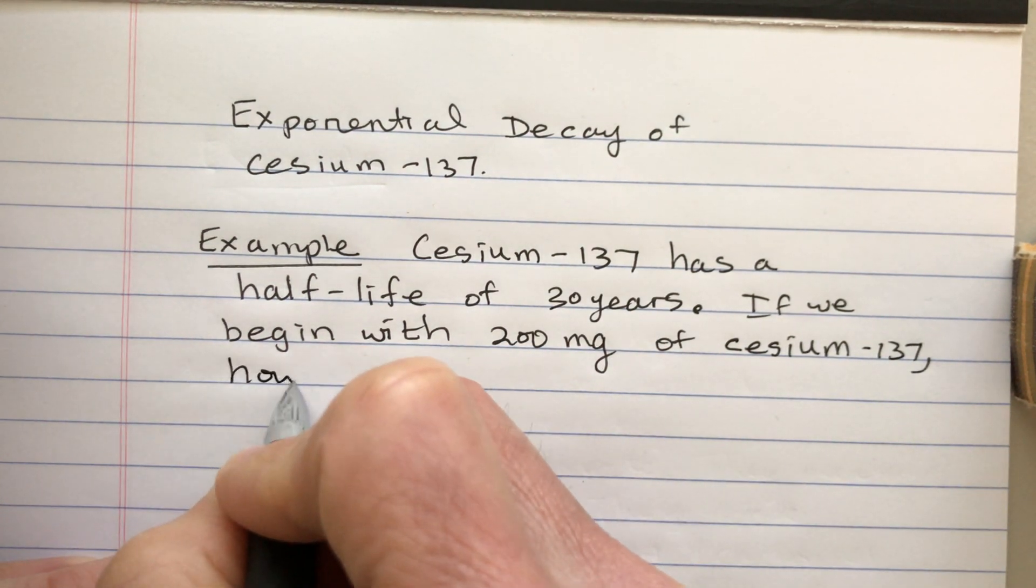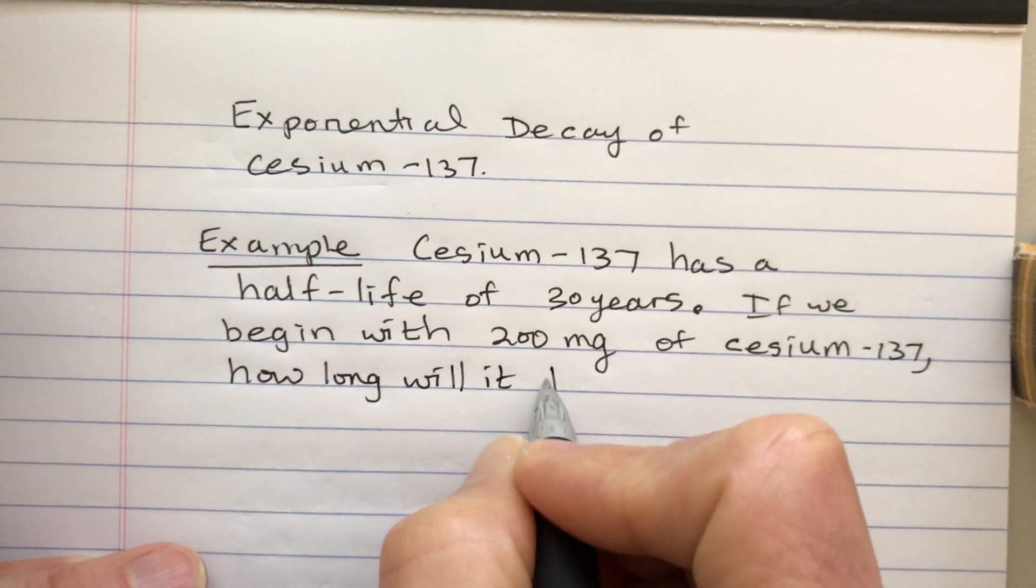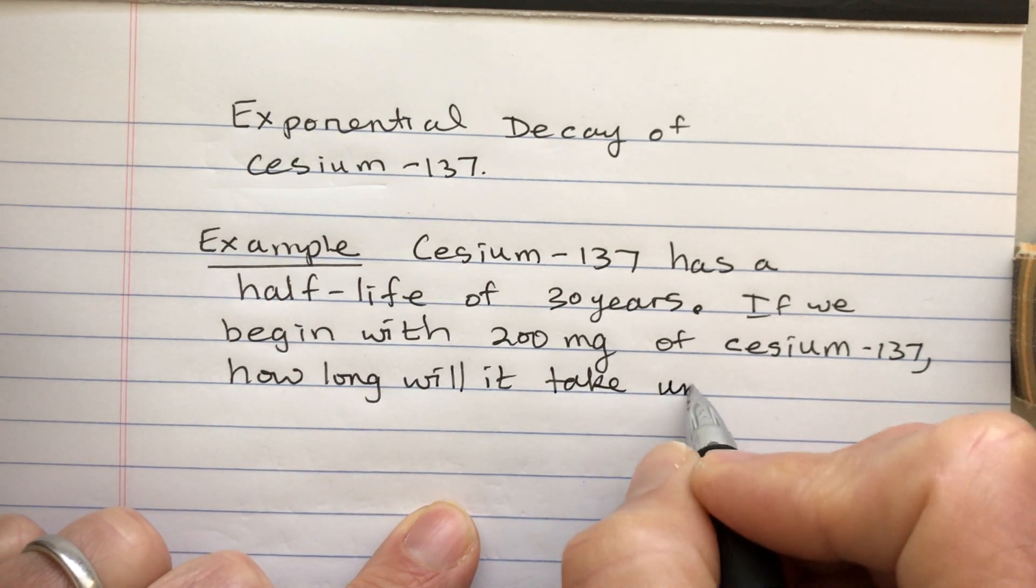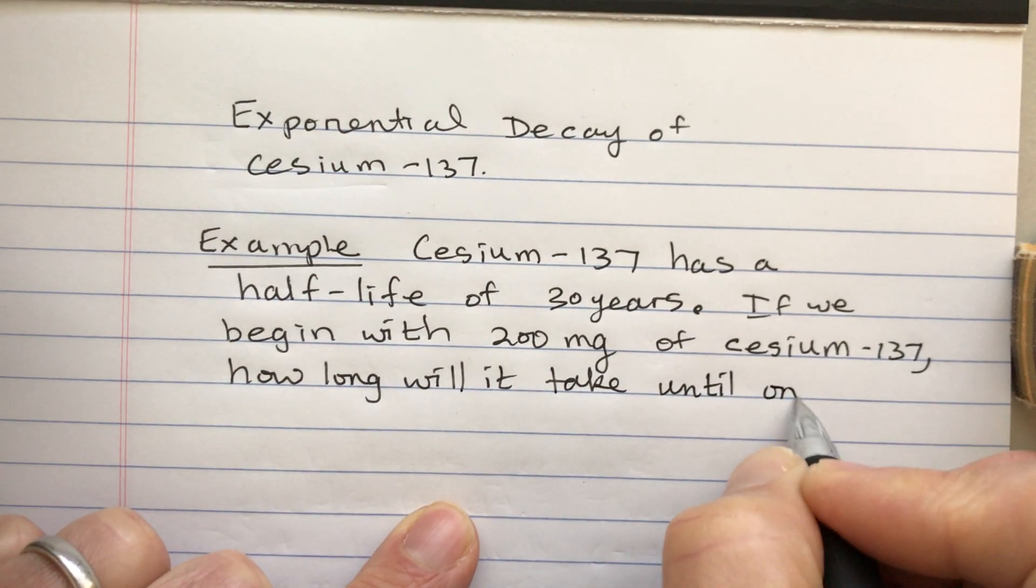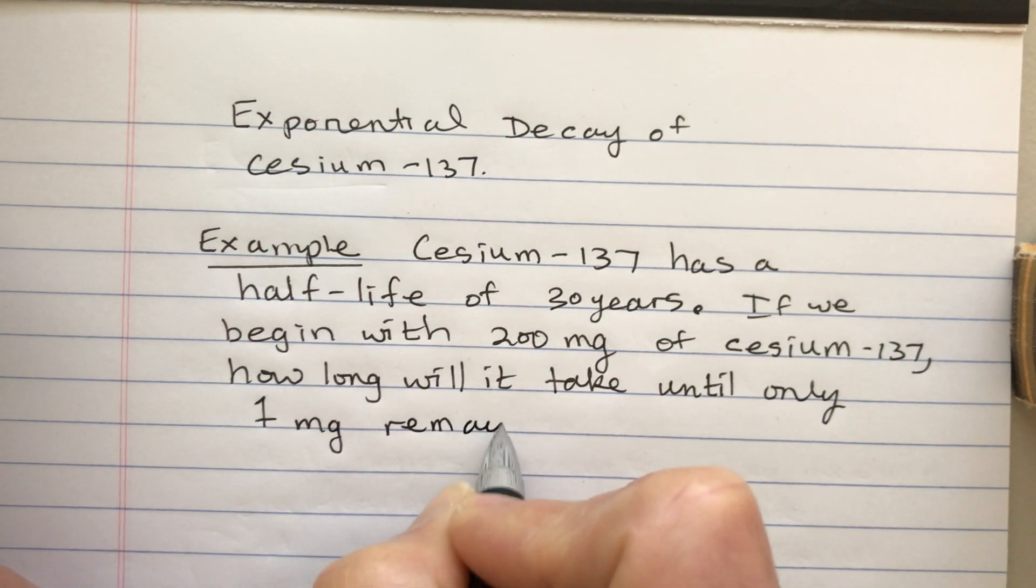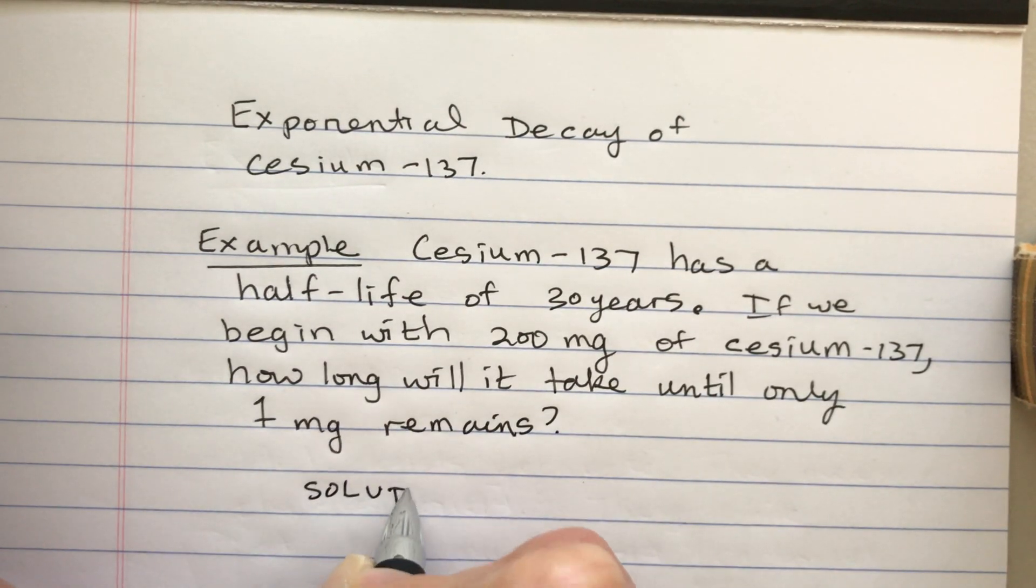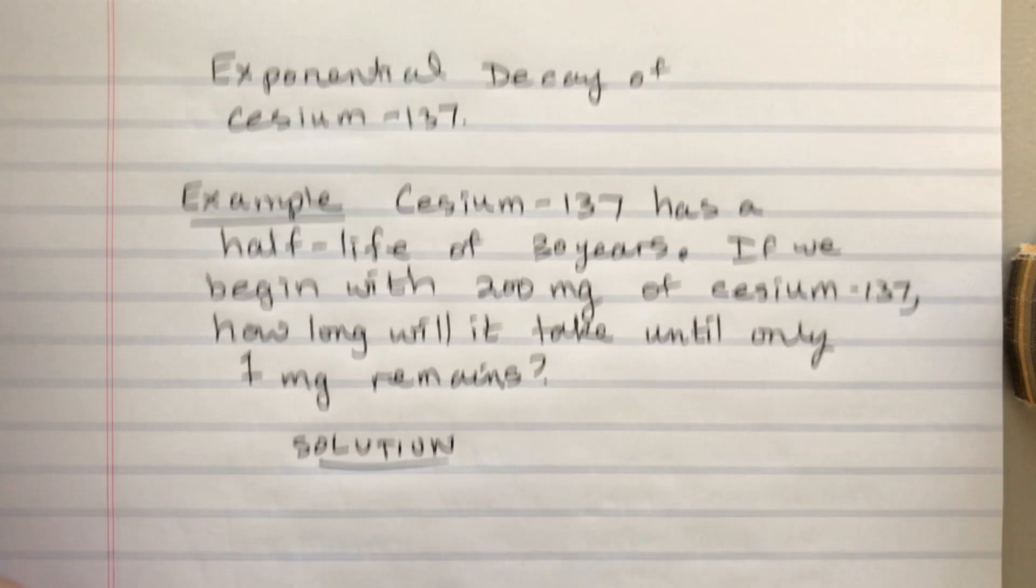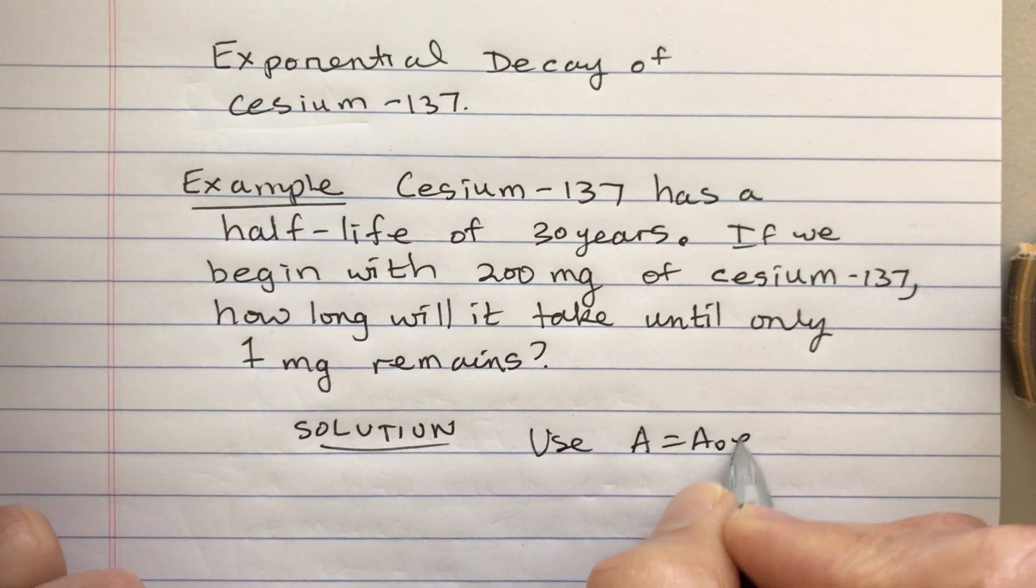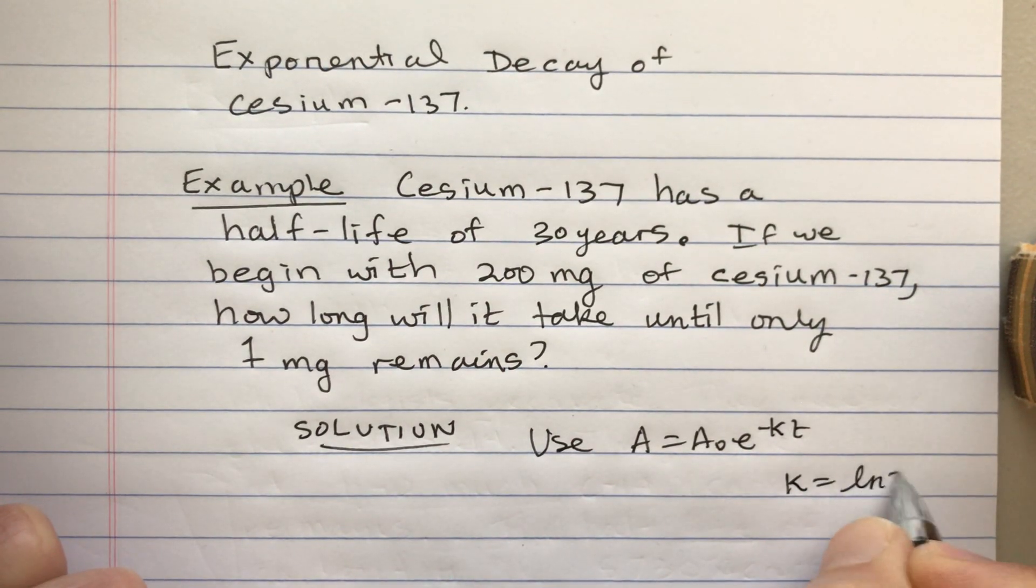Okay, so our solution is more or less based on our formula A = A₀e^(-kt) where k is equal to ln2 divided by h.